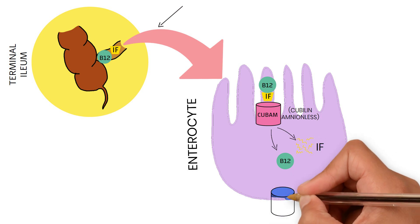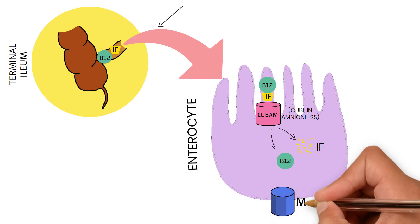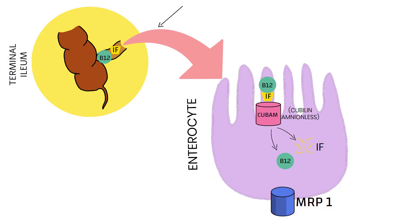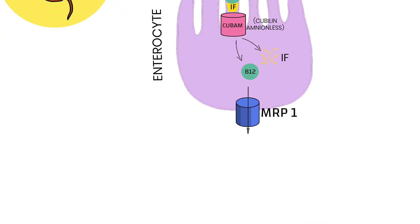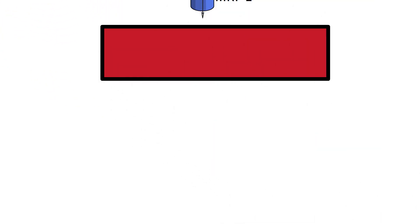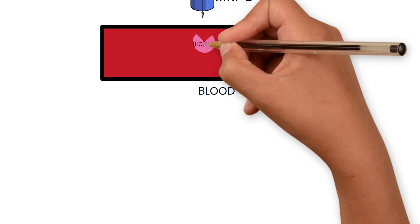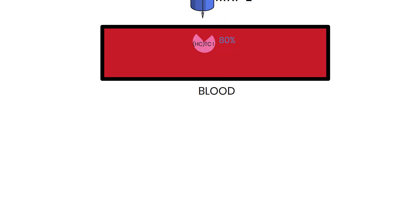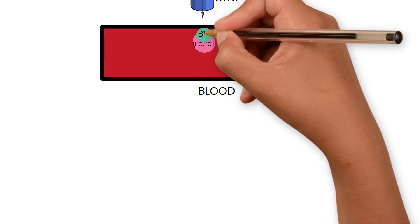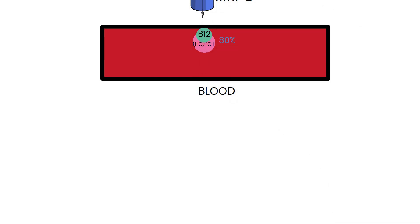B12 is then exported out of the enterocyte by a protein called multidrug-resistant protein 1. Finally, B12 reaches the blood. In blood, 80% of B12 binds to haptocorrin, similar to haptocorrin seen earlier, also known as transcobalamin 1. This haptocorrin binds tightly to B12 and does not advance delivery to tissues.